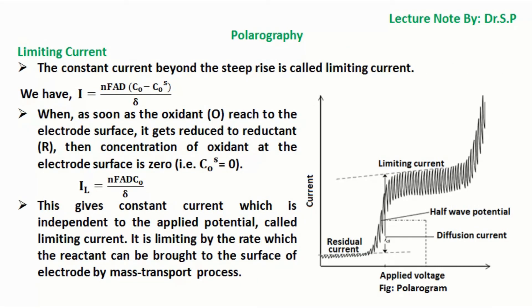Limiting current: The constant current beyond the steep rise is called limiting current. Using the formula I = NFAD × (bulk concentration minus concentration at the electrode surface) / density of mercury — when the oxidant O reaches the electrode surface and gets reduced to reductant R, the concentration of oxidant at the electrode surface becomes zero. Then the limiting current IL = NFAD × (bulk concentration) / density of mercury. This gives a constant current independent of applied potential, limited by the rate at which the reactant can be brought to the electrode surface by mass transport.